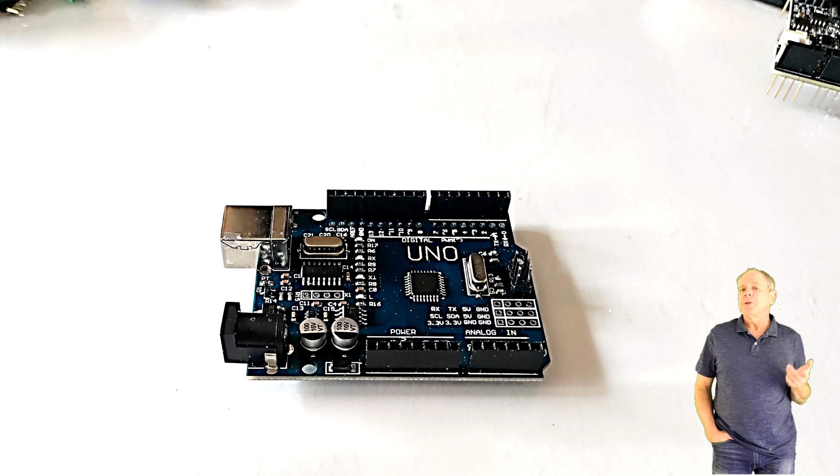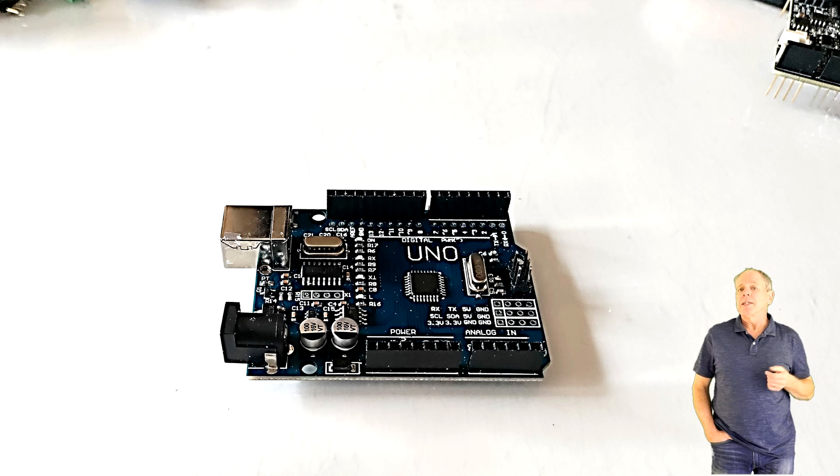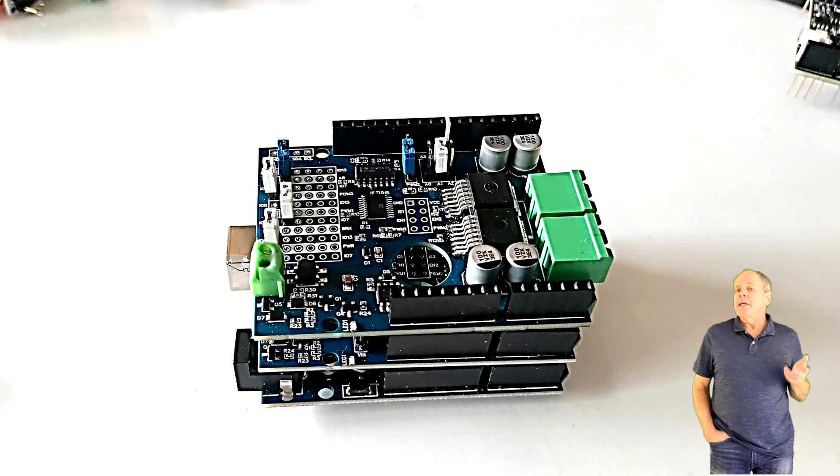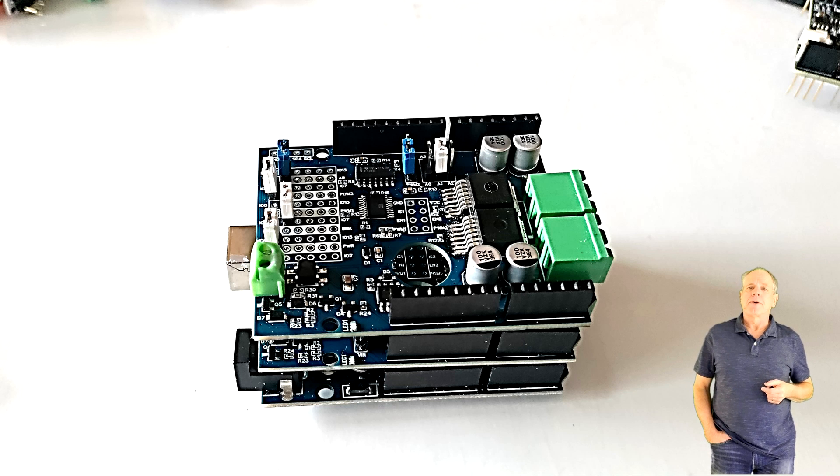At the bottom is an Arduino Uno. Mega would work as well, but I prefer the smaller form factor of the Uno. Next comes two PowerShield boards to generate the track output. Up to six can be stacked on the same Arduino and each of them is good for 5 or even 8 amps of track current.